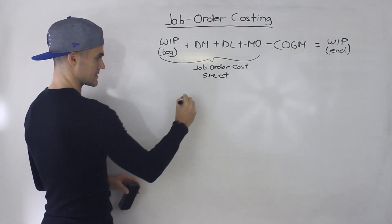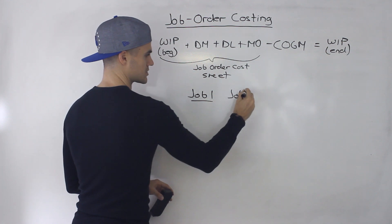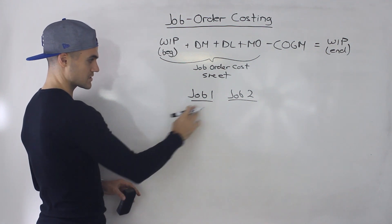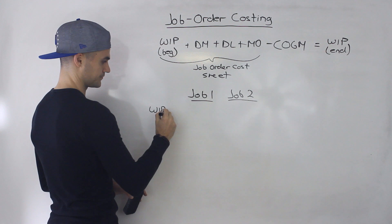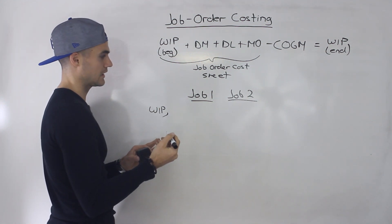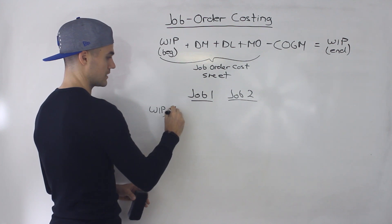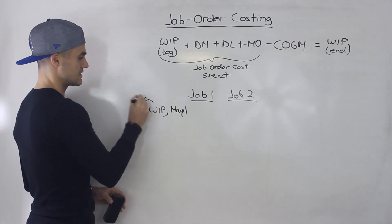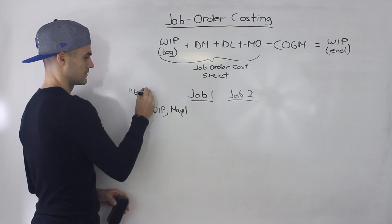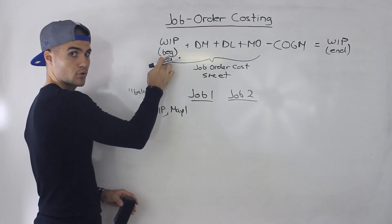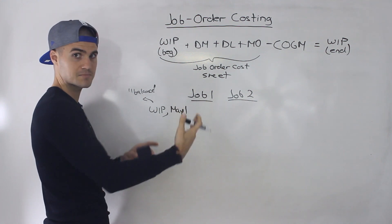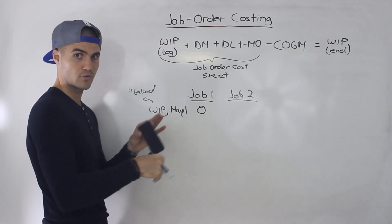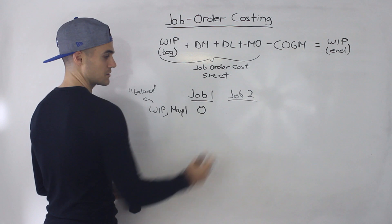So what happens is we have job one, job two — let's pretend there are two jobs. For each job, there's going to be some kind of work in process at the beginning of the period. Let's say we're looking at the month of May, so the beginning of May is May 1st. A lot of times you won't see this labeled as work in process — you'll just see it as balance — but it's the same thing: the work in process balance at the beginning of the period for that specific job. If you're starting the job that month, it's zero. If you've already been working on it in previous months, there will be some balance.